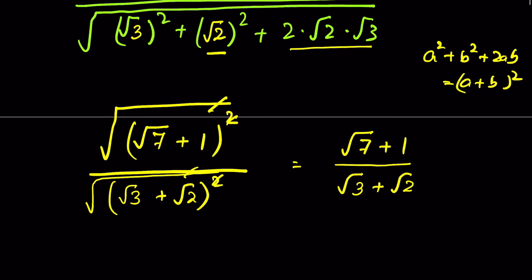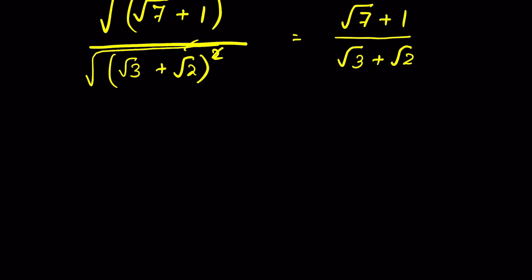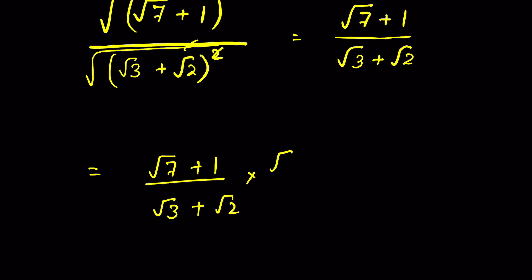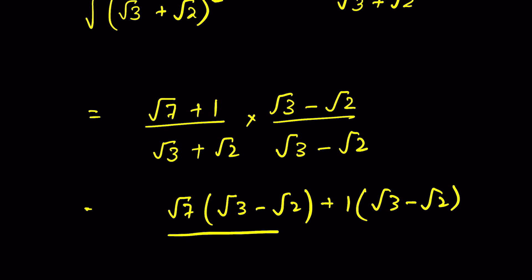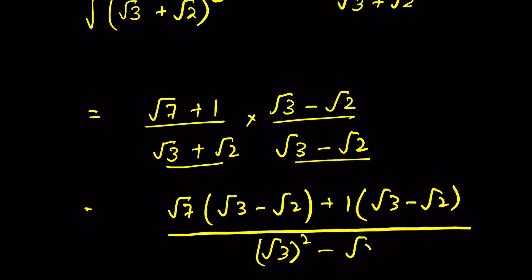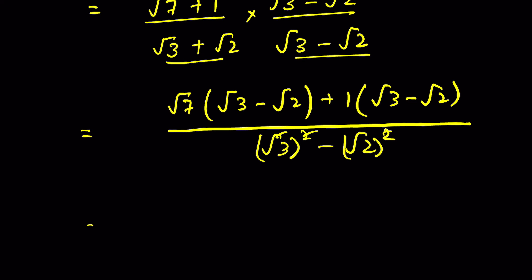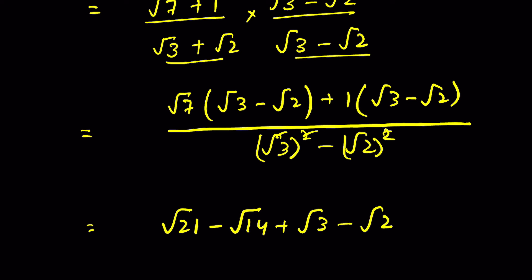To rationalize the denominator, we multiply and divide by the conjugate. So we multiply and divide by (square root of 3 minus square root of 2). This gives square root of 7 times (square root of 3 minus square root of 2) plus 1 times (square root of 3 minus square root of 2), upon square root of 3 squared minus square root of 2 squared, which is 3 minus 2 equals 1. So the result is square root of 21 minus square root of 14 plus square root of 3 minus square root of 2.